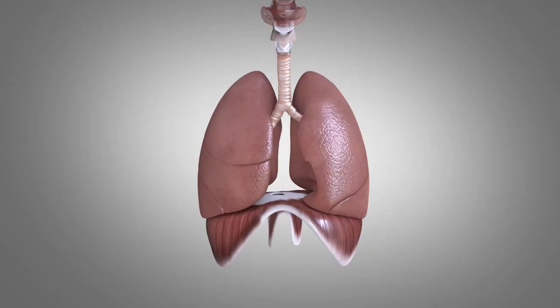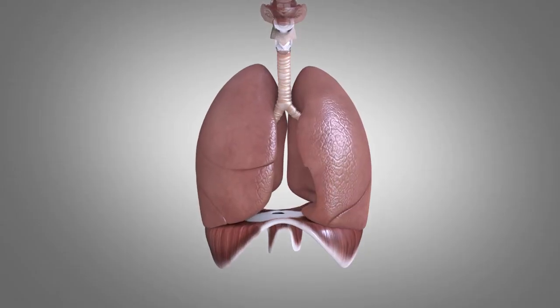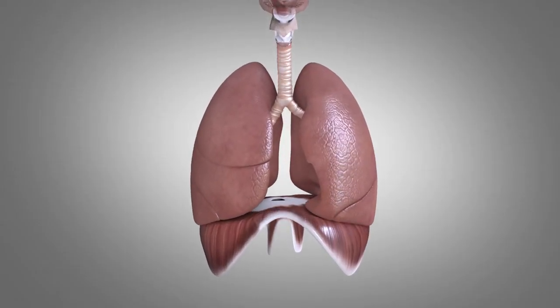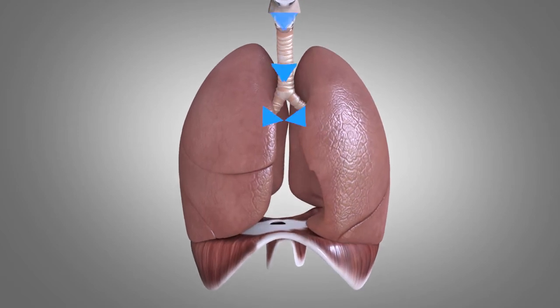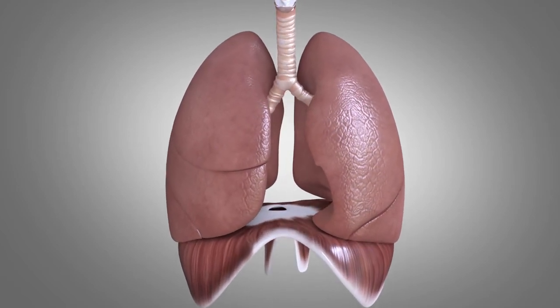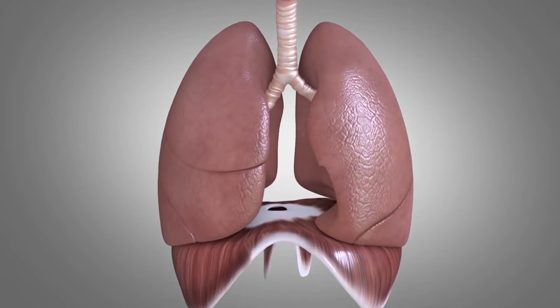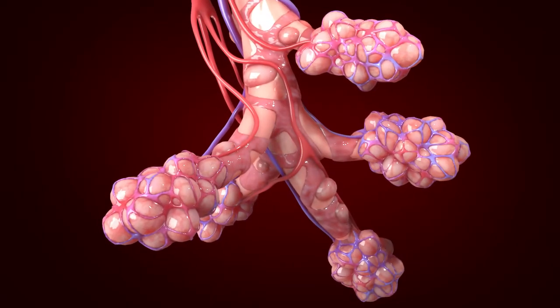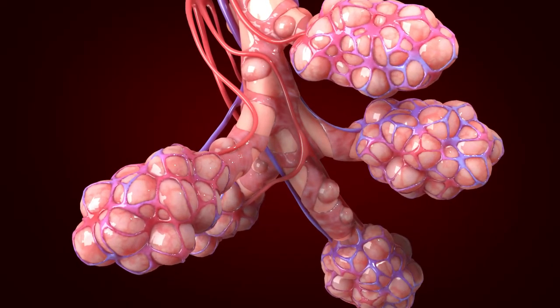On inspiration, the diaphragm moves down and the respiratory muscles contract to expand the chest such that air comes rushing into the airways, bronchi, bronchioles and finally into the alveoli for gas exchange.